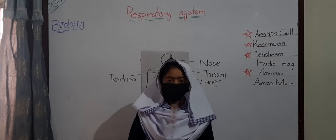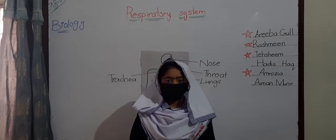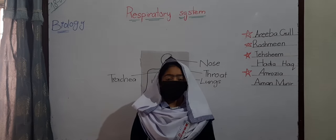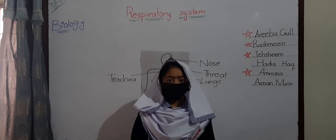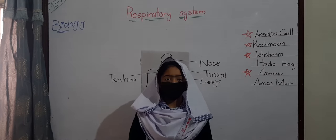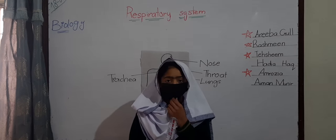There are five parts of the respiratory system: nose, throat, trachea, bronchi, and lungs.